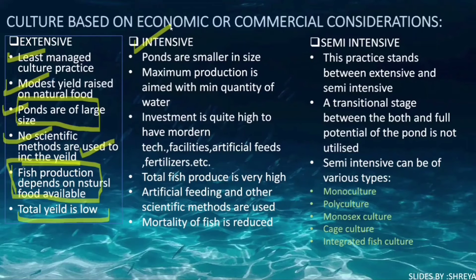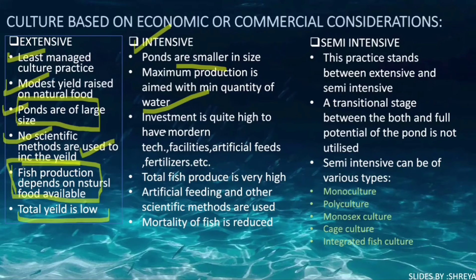In intensive type of aquaculture, ponds are smaller in size compared to extensive type. Maximum production is aimed with minimum quantity of water. Investment is quite high to support modern technologies, facilities, artificial feeds, fertilizers, etc. Total fish production is very high.